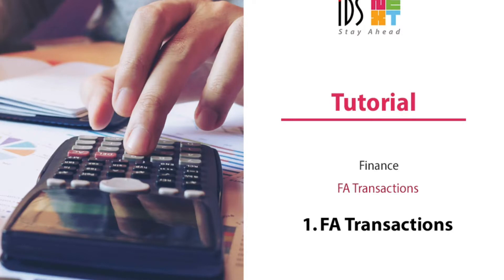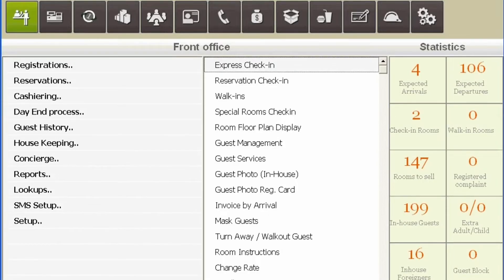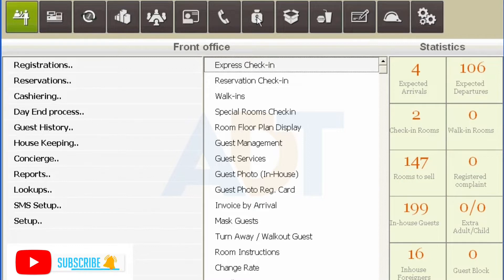Welcome. Today we are going to learn how to do transaction entry and then do bank reconciliation. Bank reconciliation is an operation where all the bank transactions entered in the general ledger are reconciled with the statement given by the bank. This enables you to have an account of checks deposited and issued for payment that are realized, and thereby ascertain the actual bank balances.